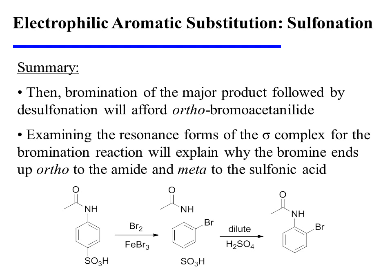Then, that major product with the sulfonic acid group in the para position can be brominated. Bromination will place the bromine ortho relative to the amide. Finally, desulfonation will yield ortho-bromo acetanilide. It's a useful exercise to examine the resonance forms of the sigma complex for the bromination reaction, because they will explain why the bromine ends up ortho to the amide and meta to the sulfonic acid group.